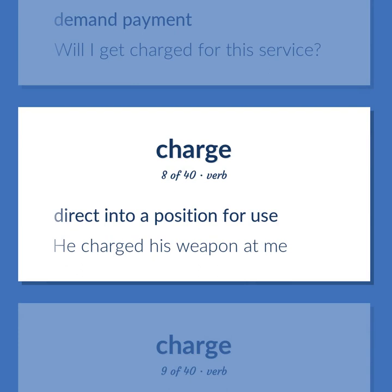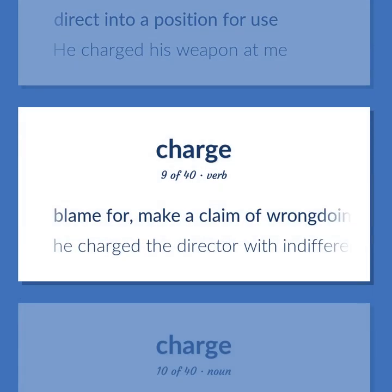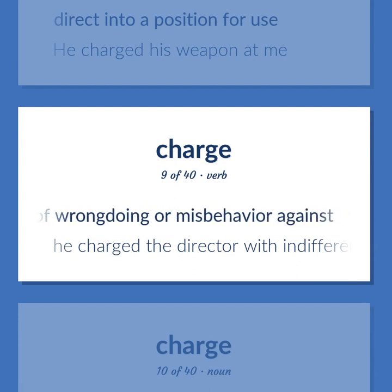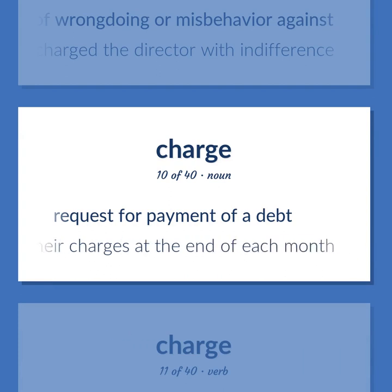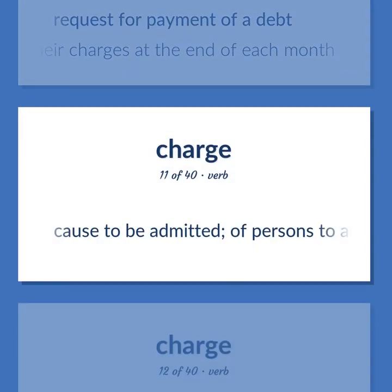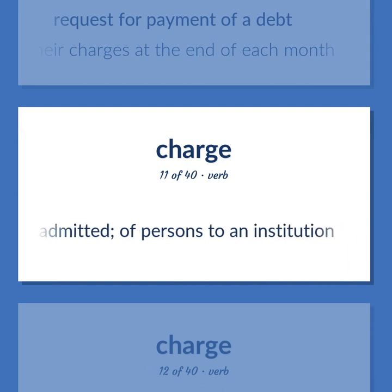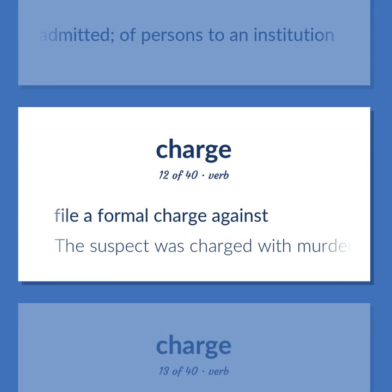Charge: direct into a position for use. Example: he charged his weapon at me. Blame for, make a claim of wrongdoing or misbehavior against. Example: he charged the director with indifference. Request for payment of a debt. Example: they submitted their charges at the end of each month. Cause to be admitted — of persons to an institution.